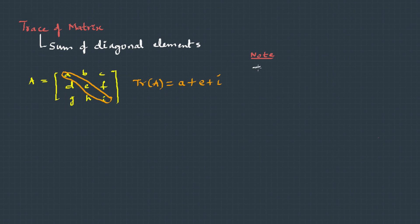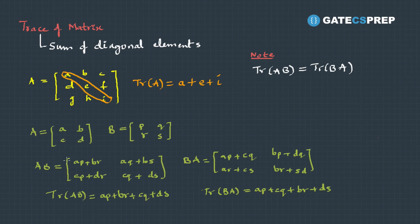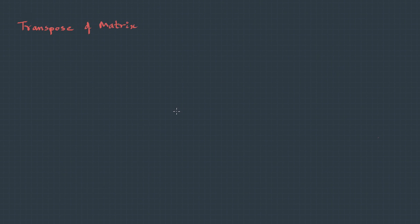One important point to note: the trace of AB is equal to the trace of BA. For example, with matrix A having elements a, b, c, d and matrix B having elements p, q, r, s, the trace of AB gives ap + br + cq + ds, and the trace of BA gives ap + cq + br + ds — these two are equal.